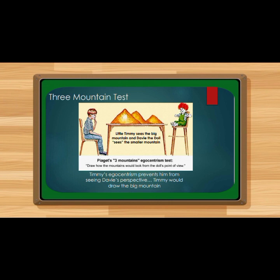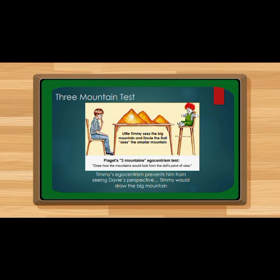Piaget's three mountains test is an appropriate example of egocentrism. In this test, little Timmy sees the big mountain from his side, while David the doll sees the smaller mountain from his side. When asked to draw how the mountains look from the doll's point of view, Timmy's egocentrism prevents him from seeing David's perspective — so Timmy would draw the big mountain rather than the smaller mountains visible from the doll's side. That is egocentrism.